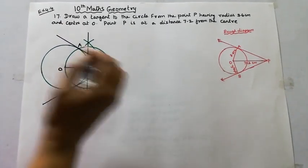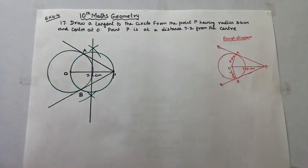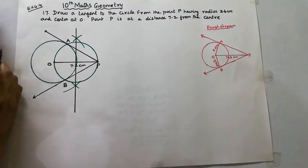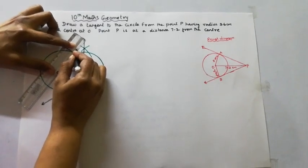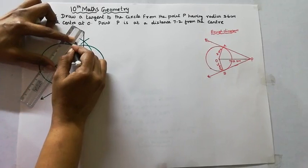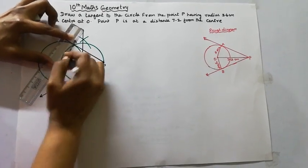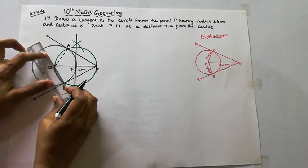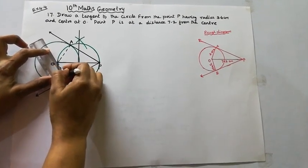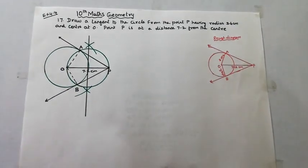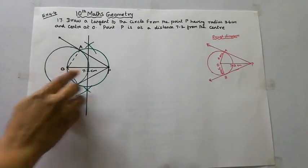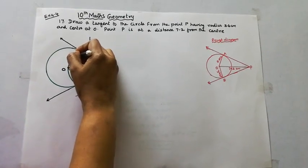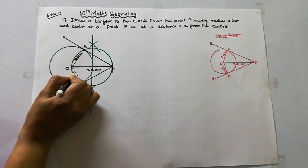The tangents PA and PB are drawn. Now I am going to make the verification. This is OP = 7.2 cm, OA = 3.6 cm, OB = 3.6 cm.